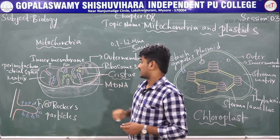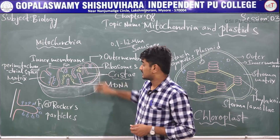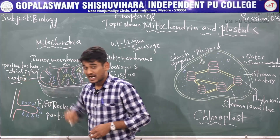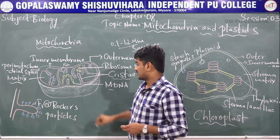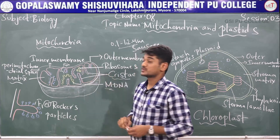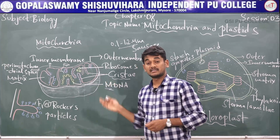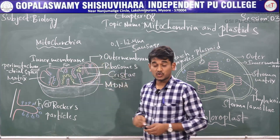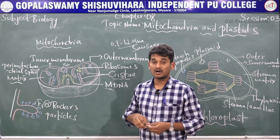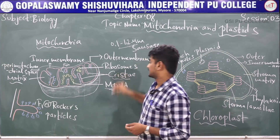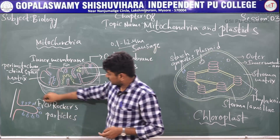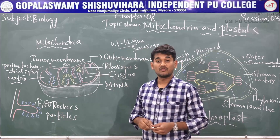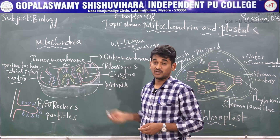The inner membrane compartment is filled with a dense homogenous substance called the matrix. This matrix contains mitochondrial DNA, RNA, some ribosomes, and some enzymes. The ribosomes, enzymes, DNA, and RNA all help in protein synthesis. The inner membrane shows a number of infolding finger-like projections called cristae. These cristae are made up of F1 elementary particles, also called Racker particles, which help in the production of ATP.